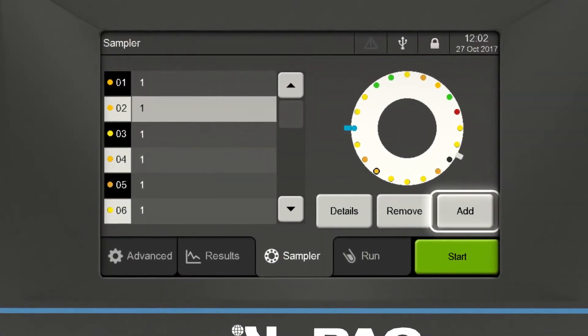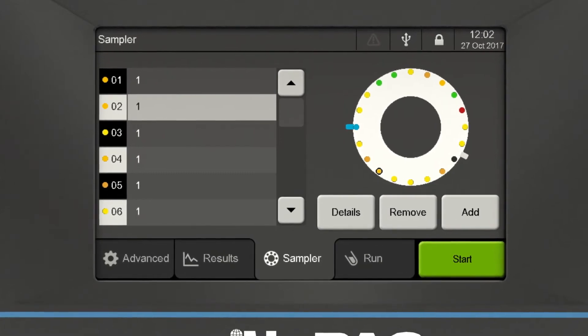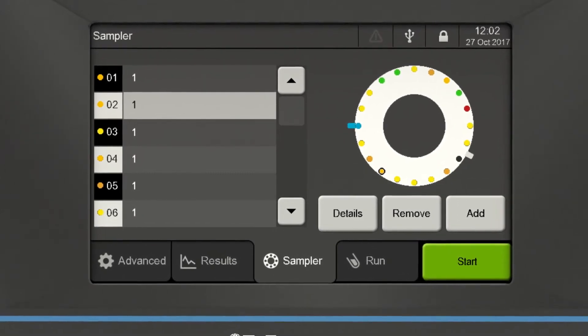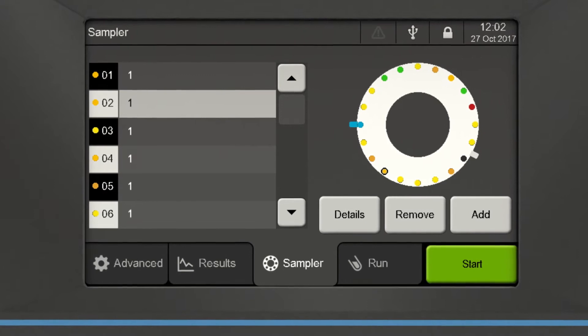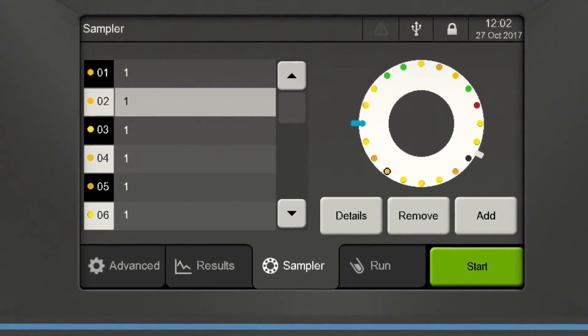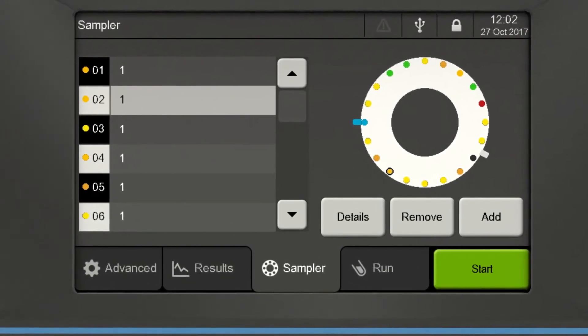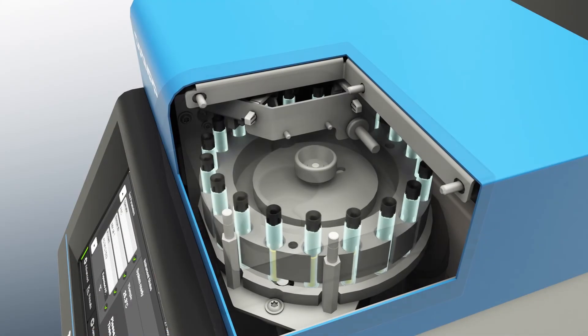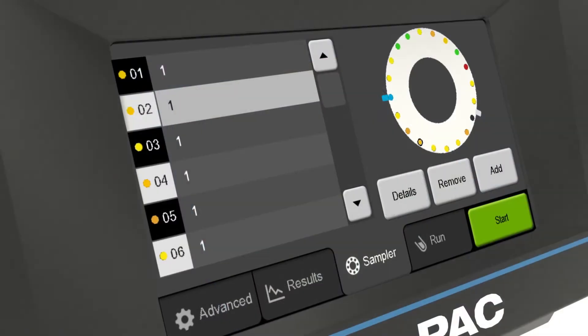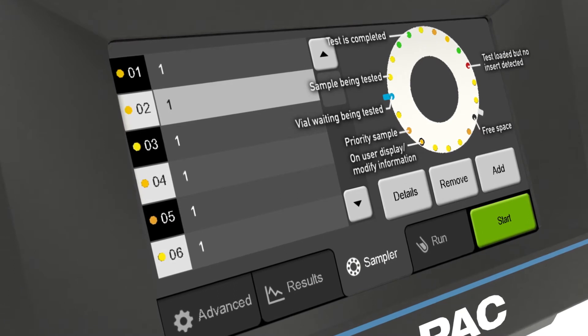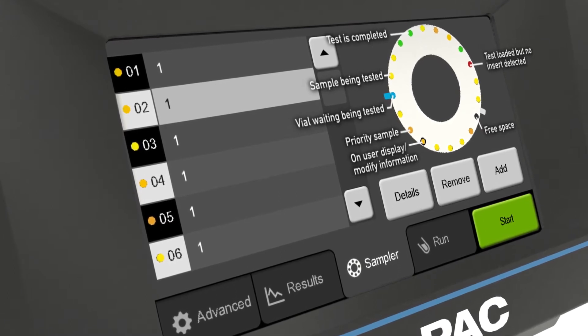The sampler screen will prompt the user to add or remove the sample. You can also set the sample type to normal or priority. Priority samples will run as soon as the current sample test is completed. Up to 20 samples can be stored in the sample changer. The sampler screen visually shows the user the status of the samples in the sample changer.